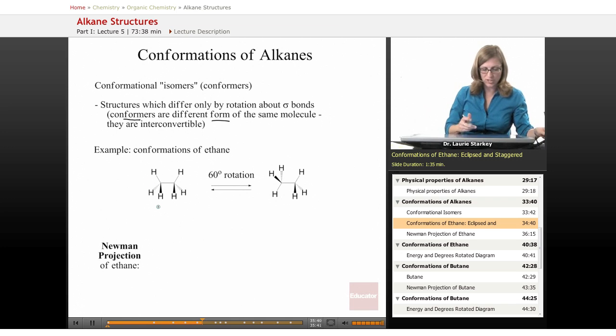We have names for these conformations. When the two hydrogens in the plane are pointing up, we call this the eclipsed conformation. And when one is up and one is down, we call this the staggered conformation.